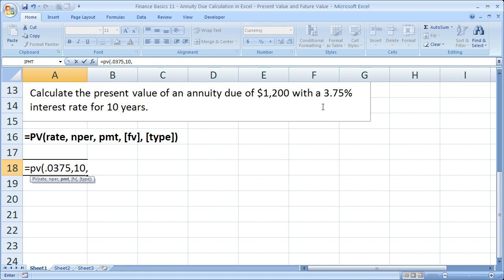Now what's the payment? Well, the payment here is our annuity due. So worded a little bit differently, but it's $1,200.